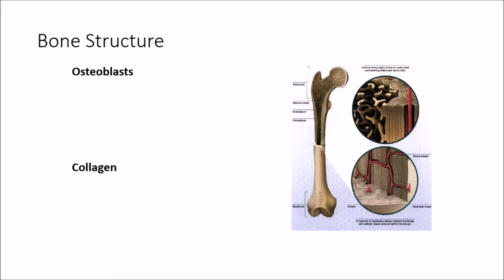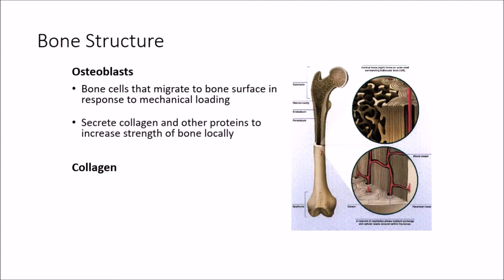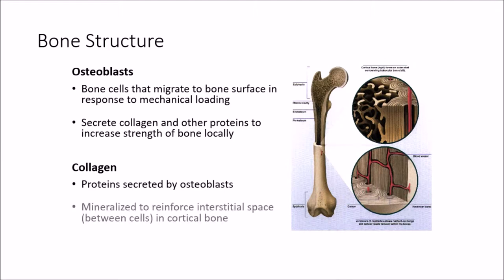Let's change gears now and look at bone structures. We have osteoblasts, which are the bone cells that migrate to the surface in response to mechanical loading. Bone is a very vascular tissue that responds to loading or lack of use — unloading. The osteoblasts secrete collagen and other proteins to increase the strength of the bone locally in the area where it's getting stressed. Collagen is a protein secreted by the osteoblasts, and when it mineralizes, it reinforces the interstitial space between the cells in the cortical bone. This is how bone gets strengthened.